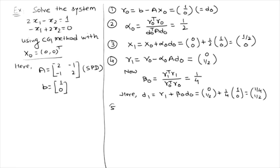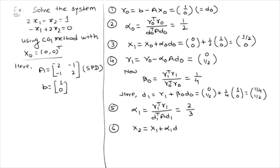Once we have D¹, we calculate α₁ = R¹ᵀR¹ / D¹ᵀAD¹, which becomes 2/3. Then the next approximation x² = x¹ + α₁D¹ = [1/2, 0] + (2/3)[1/4, 1/2] = [2/3, 1/3].